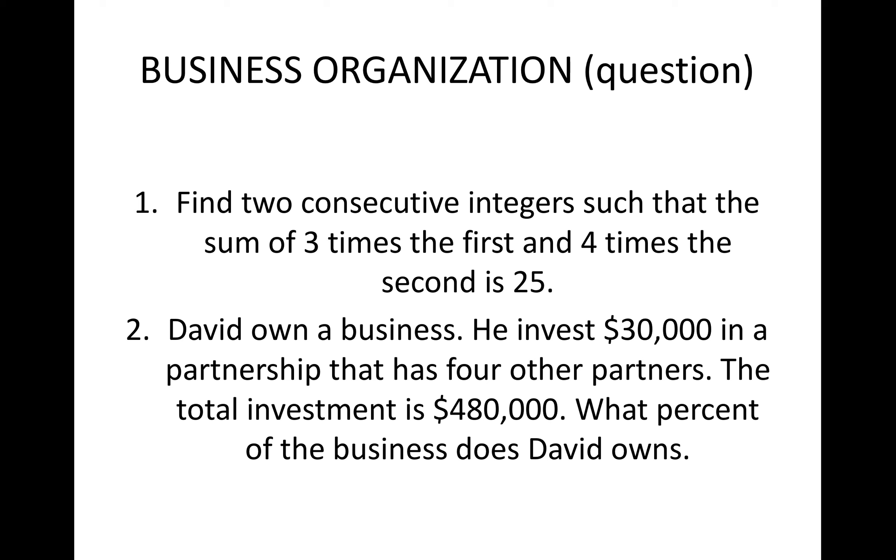The second one says David owns a business. He invests $30,000 in a partnership that has four other partners. The total investment is $480,000. What percent of the business does David own? The math is pretty simple in both. You're expected to know how to do both types of questions.